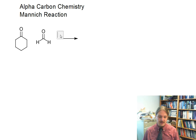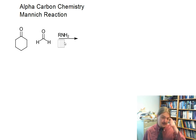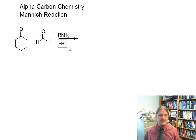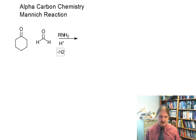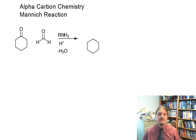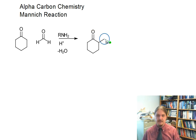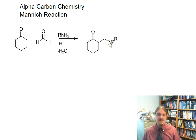You react these with some sort of amine — could be a primary amine, actually could be a secondary amine. In the presence of acid and with the removal of water, to get an amine as a product. So you form this new amino group at the alpha carbon.